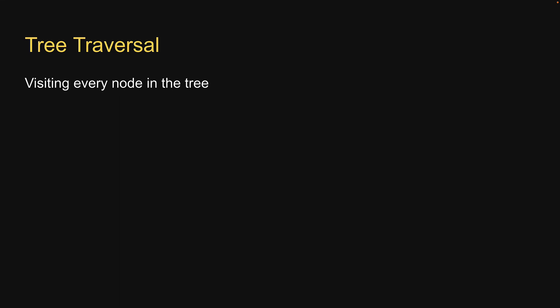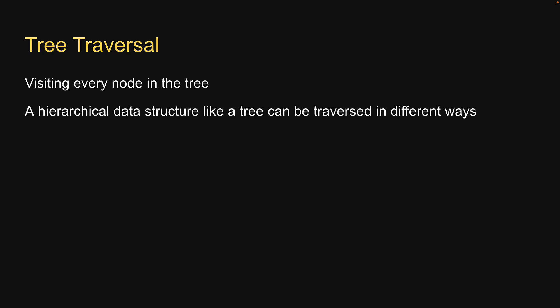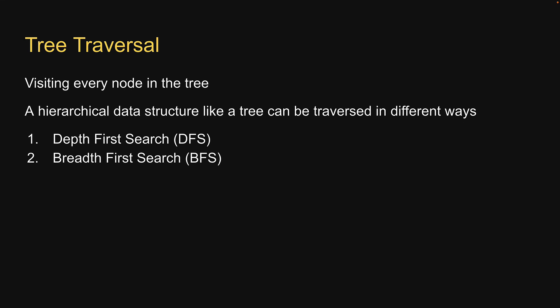Welcome back. In this video, let's learn about the different tree traversal techniques. Traversing a tree simply means visiting every node in the tree. Linear data structures like arrays, stacks, queues, and linked lists have only one way to read the data. But a hierarchical data structure like a tree can be traversed in different ways. Generally, there are two widely used ways for traversing trees: depth-first search or DFS, and breadth-first search or BFS.